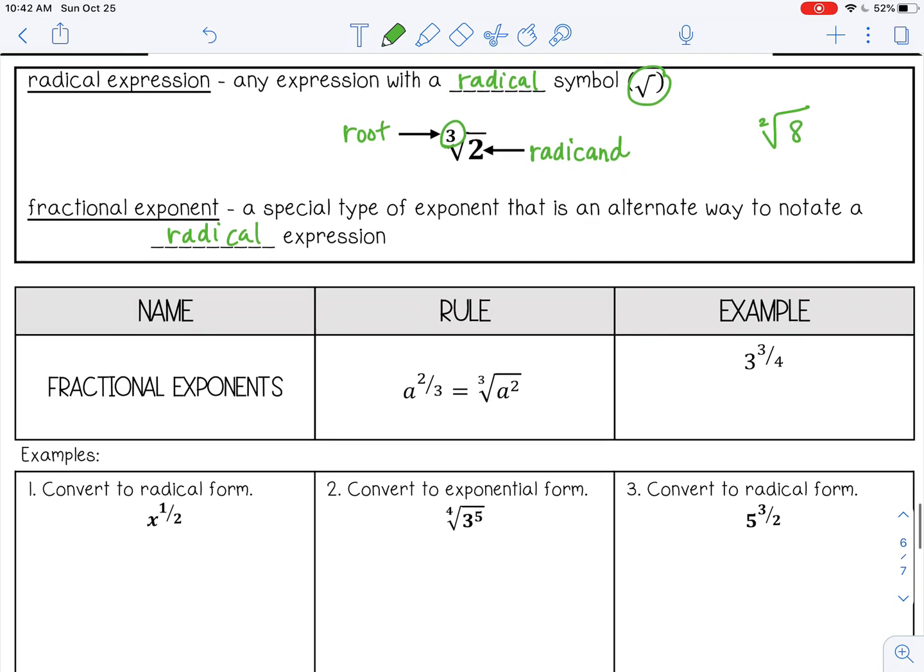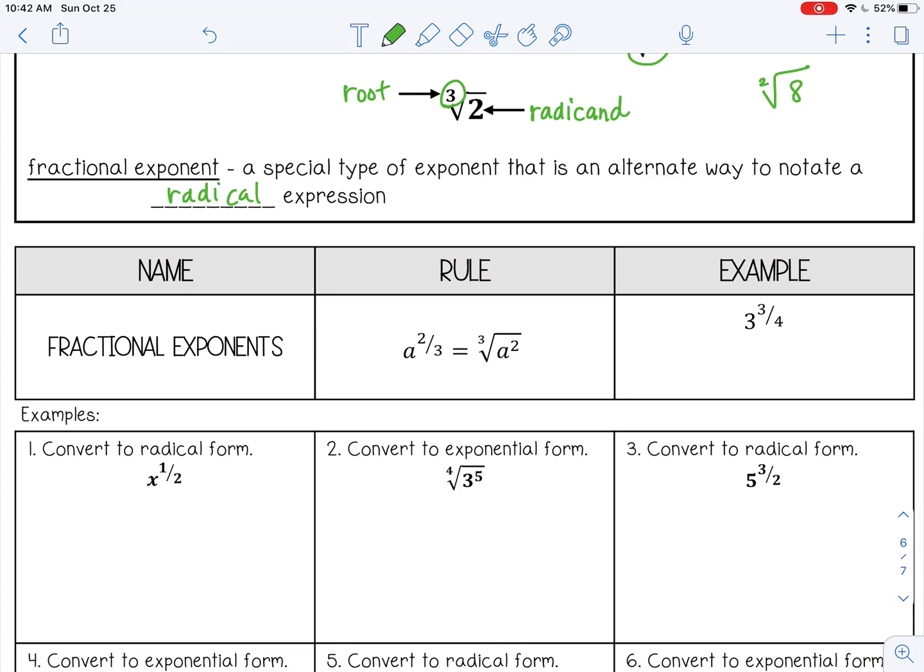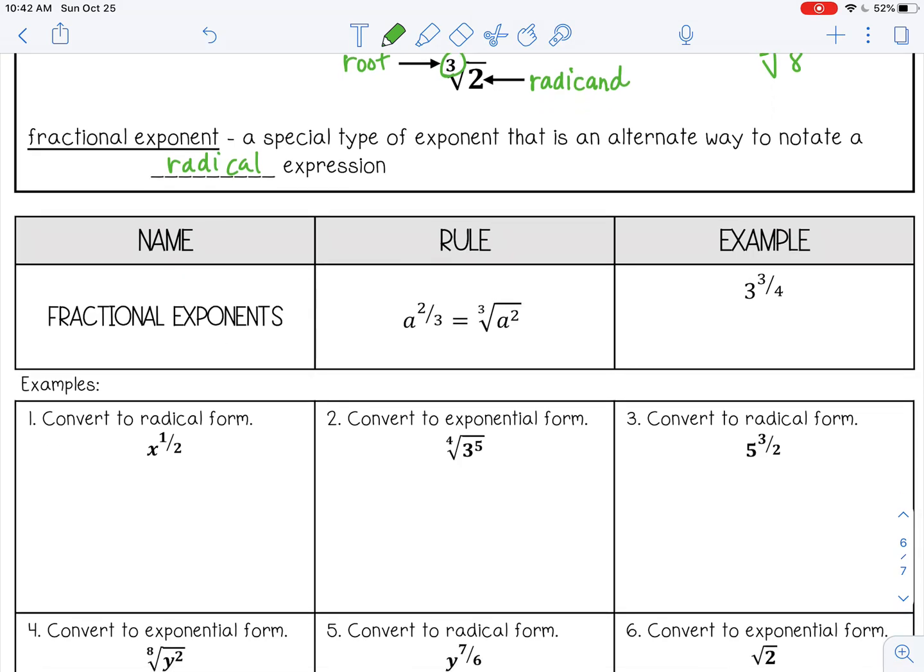So let's look at the rule here. This is the fractional exponents rule. The rule says if I have a to the two-thirds power, I can rewrite that as the third root of a squared. So here's my root, and then I just have an exponent in the radicand.